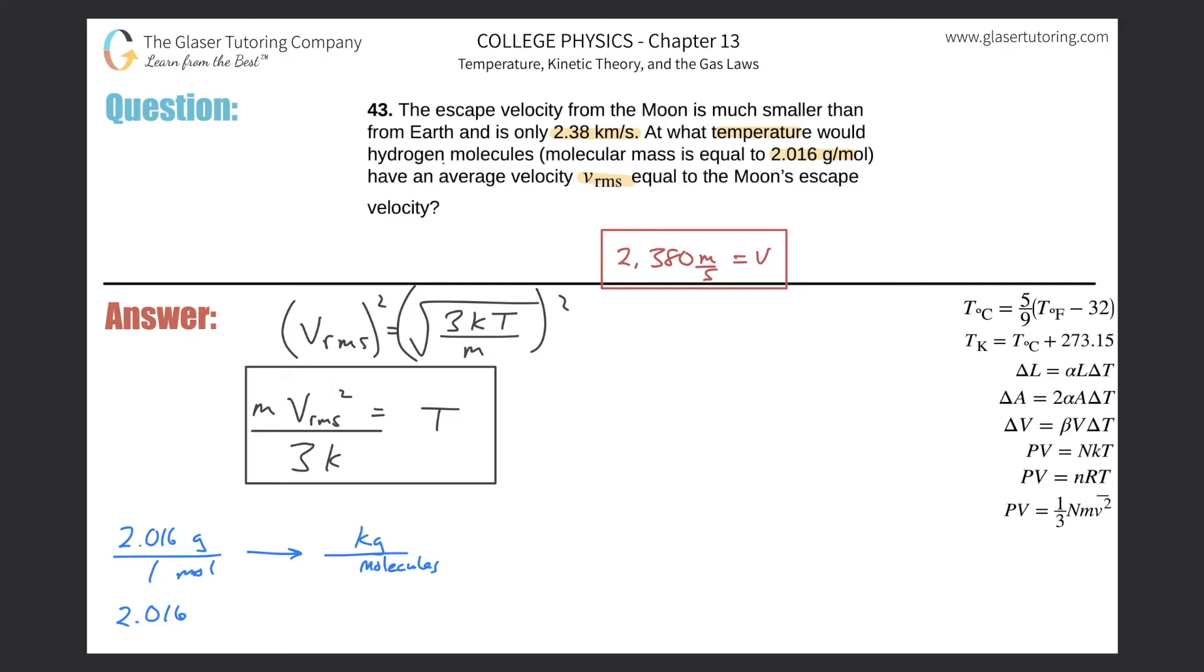Here we have grams per one mole and I gotta get rid of grams, so they go on the bottom. Kilogram goes on the top, there's a thousand grams in one kilogram. Very good. So now we can cancel the grams. Now we would have kilogram per mole, but I don't want to stop there.